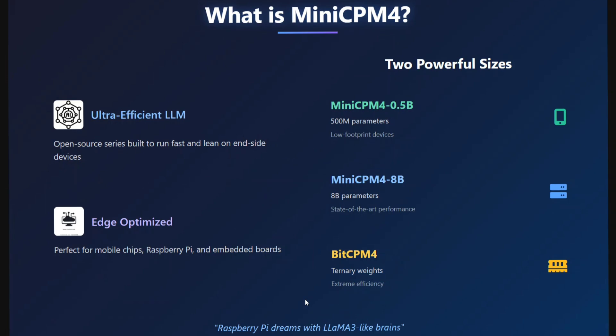MiniCPM 4 is an ultra-efficient, open-source LLM series built to run fast and lean on edge devices. It is highly optimized for edge deployment, and if you're using CPUs you should be overjoyed because such models can run on CPUs as well. It is perfect for mobile chips, Raspberry Pi, and embedded boards.